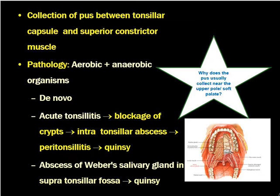The third important cause is abscess of Weber's salivary gland in the supra-tonsillar fossa, which leads to Quincy. The supra-tonsillar fossa contains some minor salivary glands — especially Weber's gland — which help to clear the peritonsillar area. When they get infected, there may be abscess formation caused by abscess of Weber's salivary gland.